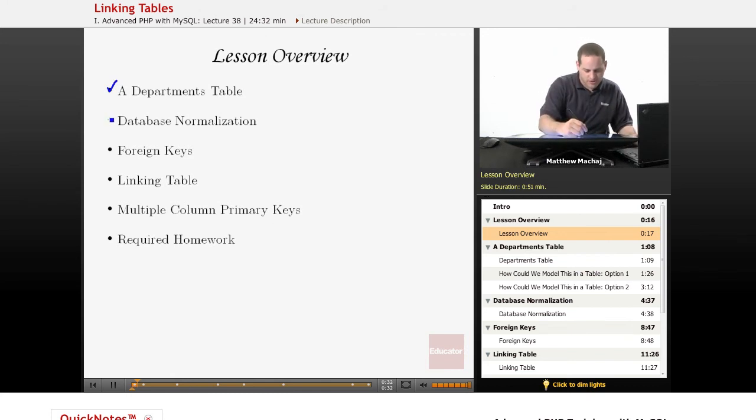As part of that discussion, we're going to be talking about a concept called database normalization, which is a way to basically make your database work and act more efficiently. One of the topics related to that is something known as foreign keys. Then we're going to talk about what a linking table is, and also, related to a linking table, how you can have a table with a primary key that's comprised of multiple columns.